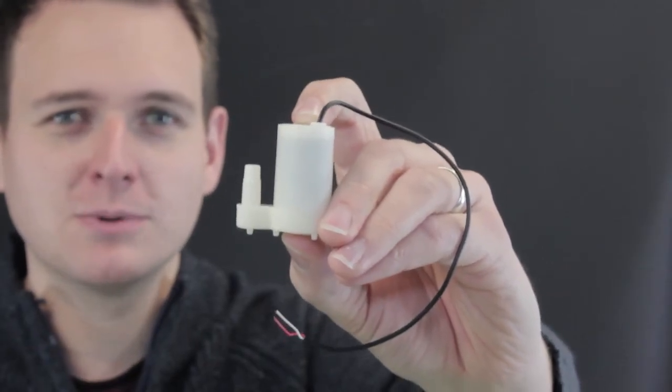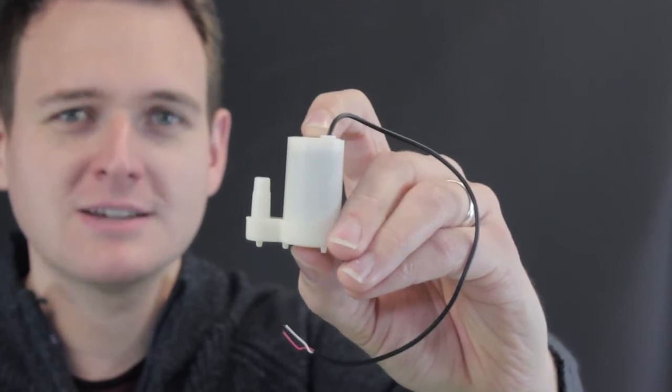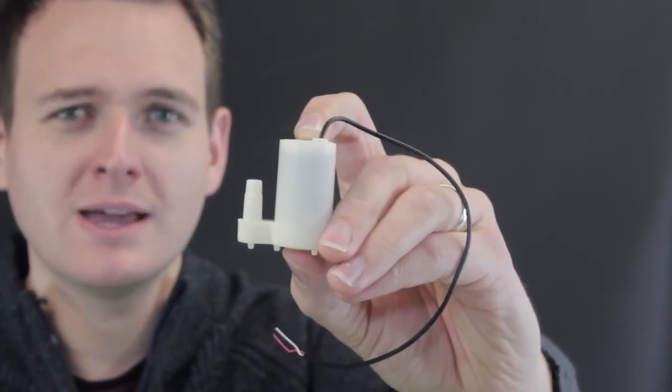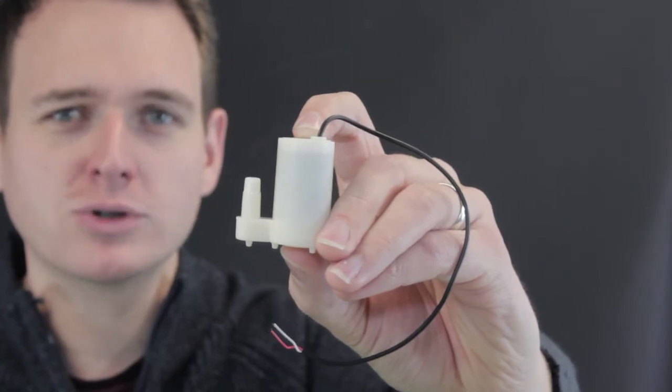This 3 volt vertical submersible low-power water pump is an ideal solution for creating a small indoor water feature or as part of a plant watering system.